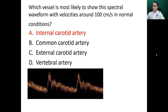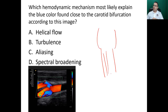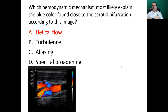Next question: which hemodynamic mechanism most likely explains the blue color found close to the carotid bifurcation according to this image? At the carotid bulb we have flow layer separation — the layers in the center continue straight while the layers close to the wall reverse direction. This phenomenon has another name. The answer is A: helical flow.